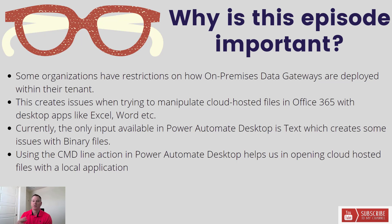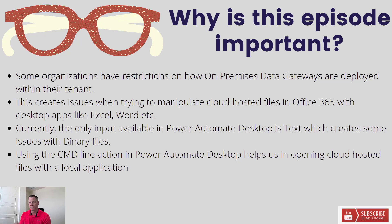What we can do is work around this scenario by using the command line action inside Power Automate Desktop. We pass the URL for the file — perhaps it's in SharePoint — as a text input, then use the command line action to open a desktop application like Microsoft Excel, passing in the file location as a parameter. Once the file is open, we can manipulate it using the actions available in Power Automate Desktop.